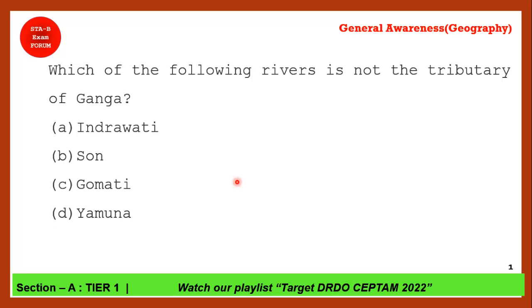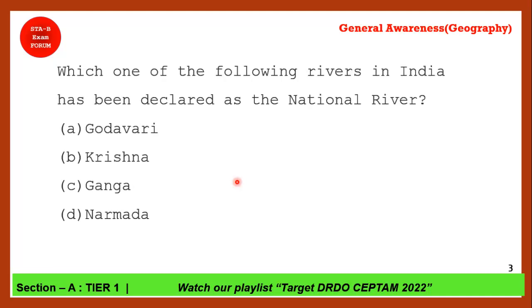Next question: Which river in India has been declared a national river? This is very simple — Ganga is our national river, so Ganga is the correct answer.